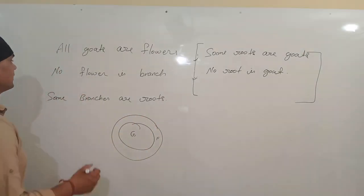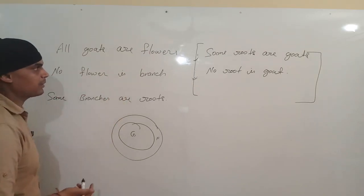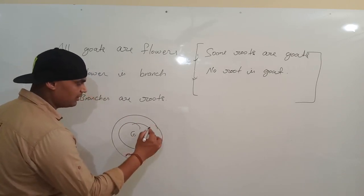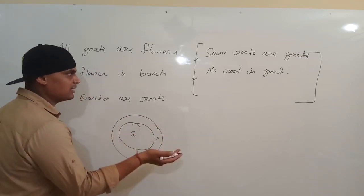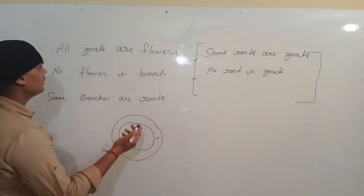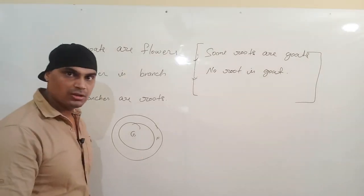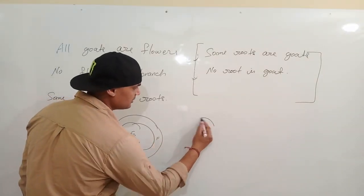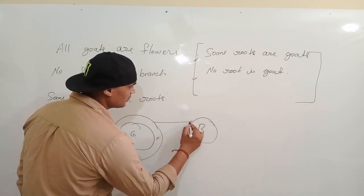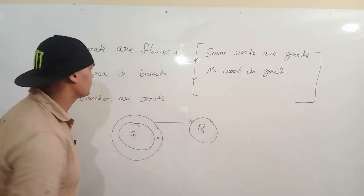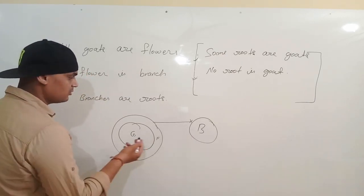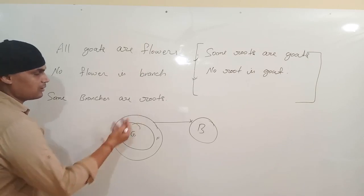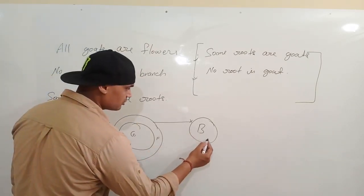For now we draw the standard diagram. The next statement says: 'No flower is branch' — meaning no flower has any connection with branch. So draw branch separately, with no connection to flower (F). Since F has no connection with B (branch), G (goat) automatically has no connection with branch either. Next: 'Some branches are roots' — kuch branches roots hain.